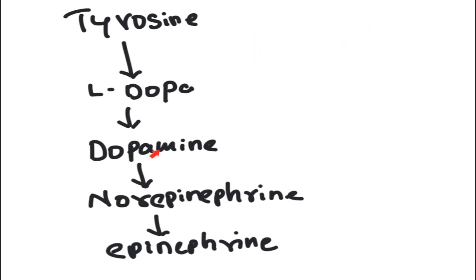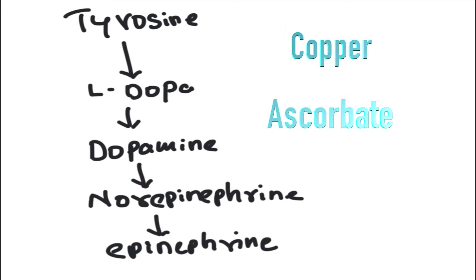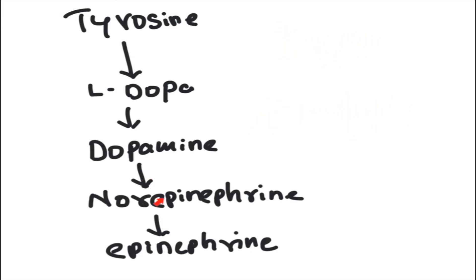Dopamine beta-oxidase enzyme needs copper to convert dopamine into norepinephrine, and it also needs vitamin C. Norepinephrine acts as the sympathetic neurotransmitter, so all sympathetic neurons express these three enzymes.